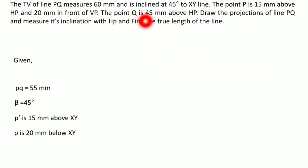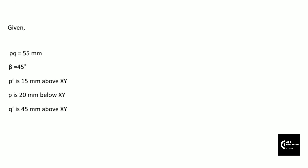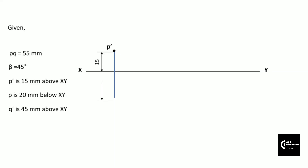Point Q-dash is given 45 mm above HP. We can't locate point Q-dash directly, but at least we can draw the locus of point Q-dash, which is 45 mm above the XY line. Very first of all, we will draw the XY line and then locate point P-dash and point P. P-dash is 15 mm above XY; P is 20 mm below XY. Q-dash is coming on this locus itself.